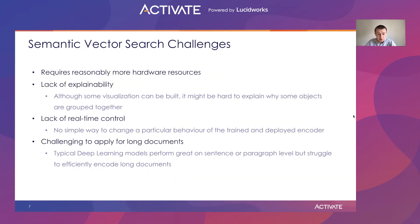There are a few particular challenges, though. Semantic vector search requires reasonably more hardware resources. There is also some lack of explainability — although some visualization can be built, it might still be hard to explain why some objects are grouped together. There is lack of real-time control, and there is no simple way to change particular behavior of a trained and deployed encoder. It is also quite challenging to apply for long documents, as typical models perform great on sentence or paragraph level but struggle to efficiently encode long documents.